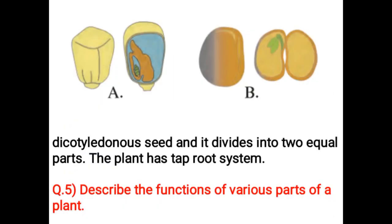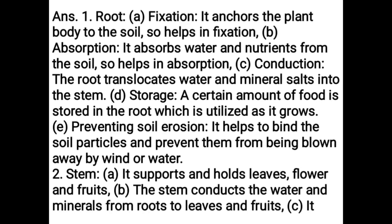Functions of various parts of a plant. Root — Fixation: It anchors the plant body to the soil. Absorption: It absorbs water and nutrients from the soil. Conduction: The root translocates water and minerals from the soil into the stem. Storage: A certain amount of food is stored in the root, which is utilized as it grows. Preventing soil erosion: It helps to bind soil particles and prevent them from being blown away by wind or water. Stem: It supports and holds leaves, flowers, and fruits. The stem conducts water and minerals from roots to leaves and fruits.